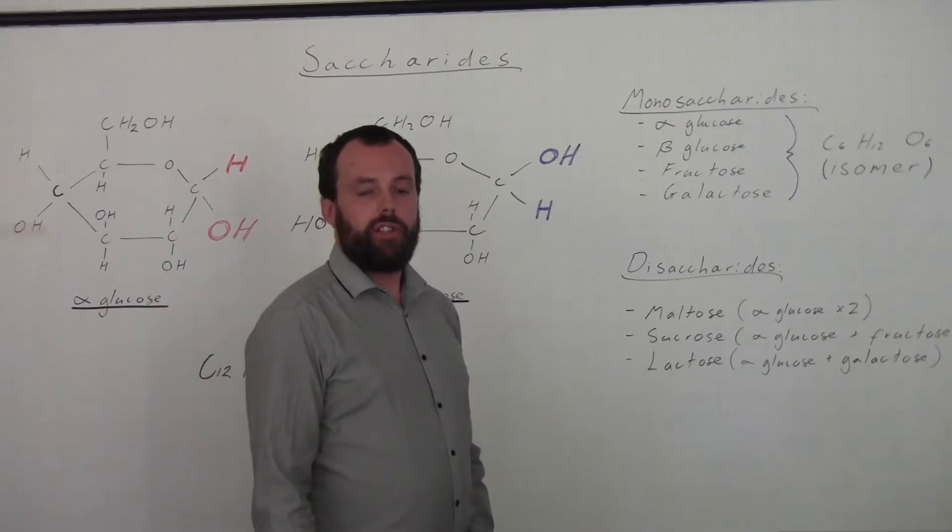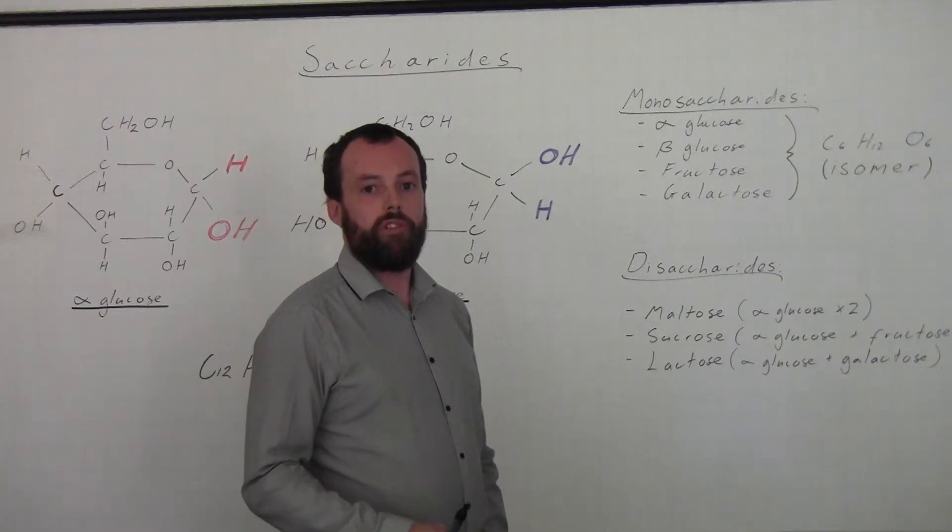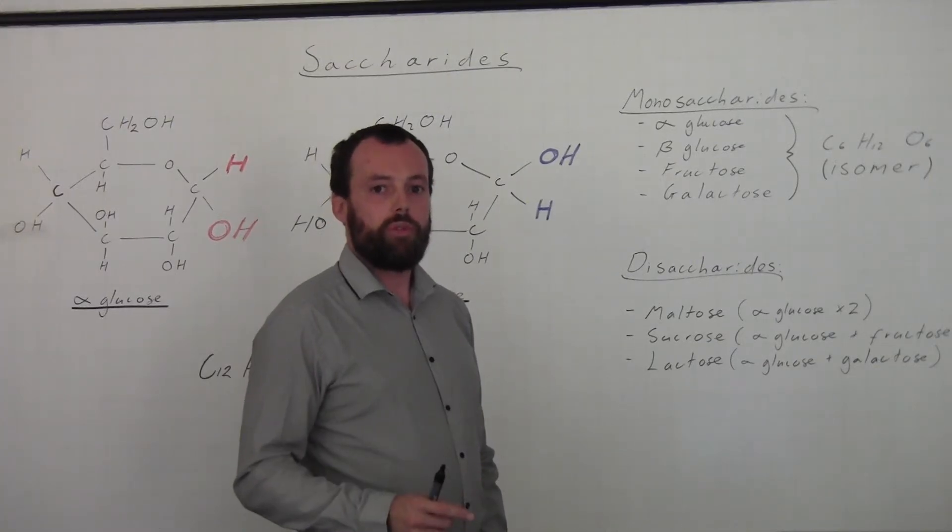Each of these monosaccharides has the same chemical formula: C6H12O6. However, they're arranged differently. So whilst they might have the same elements and indeed the same number of elements, the way in which those elements are arranged is different.